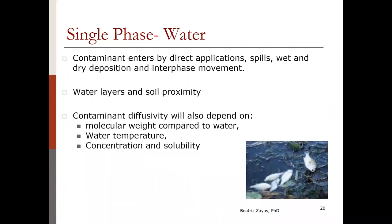Contaminants enter water by direct applications, through spills, wet and dry deposition, and interface movement within water levels. Proximity to soil also affects transport. Variables that affect how pollutants move in water include the molecular weight of the pollutant compared to water, water temperature, how soluble the substance is in water, and concentration. Some substances may be hydrophilic and/or lipophilic and may be absorbed by species in the water as well.